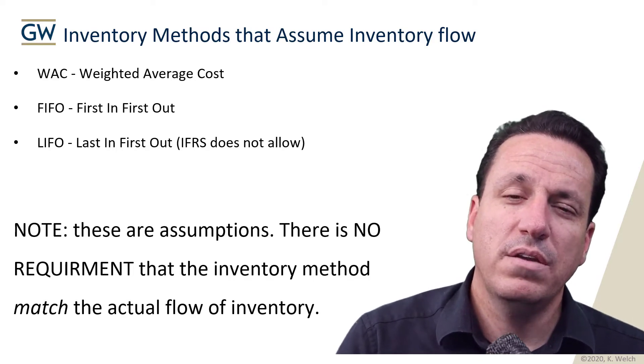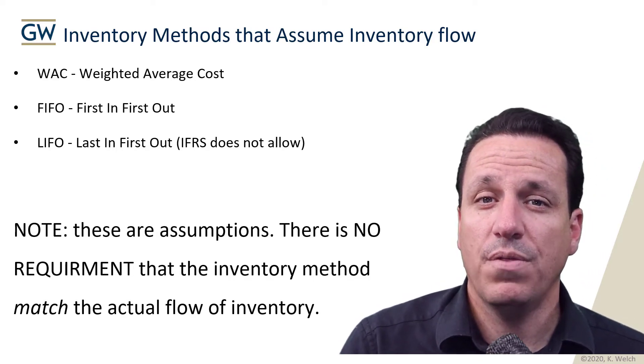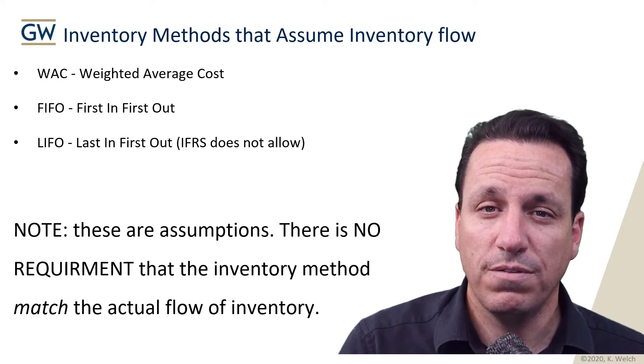An important thing to note is none of these accounting assumptions about how things are happening needs to match the actual flow. That can be really tough for some of you, because you'll think about it and want to match things to the physical flow. Even in my examples, I'm illustrating the principle by showing how it would match the inventory flow. That said, it is not a requirement that the inventory assumption used to account for the inventory match the actual flow of the inventory.